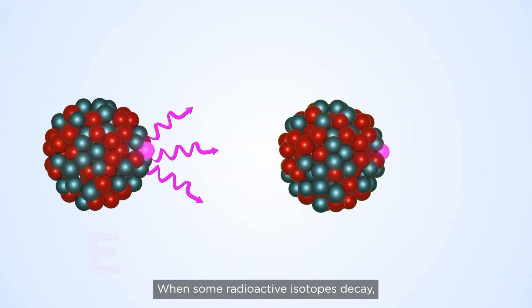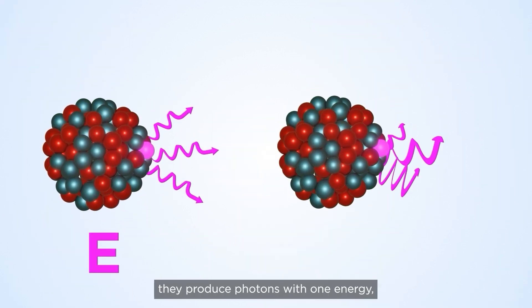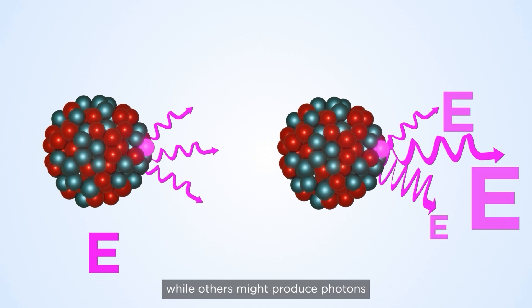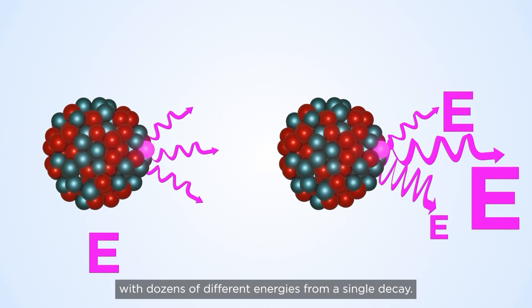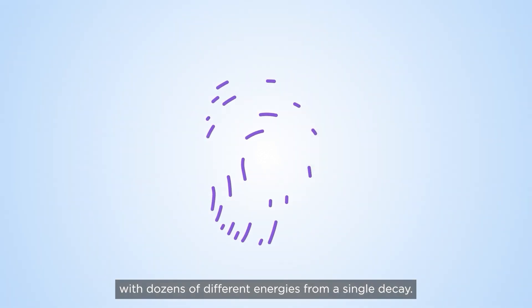When some radioactive isotopes decay, they produce photons with one energy, while others might produce photons with dozens of different energies from a single decay.